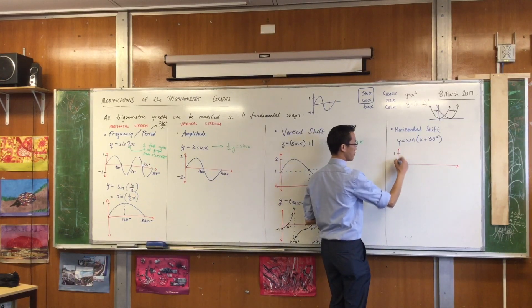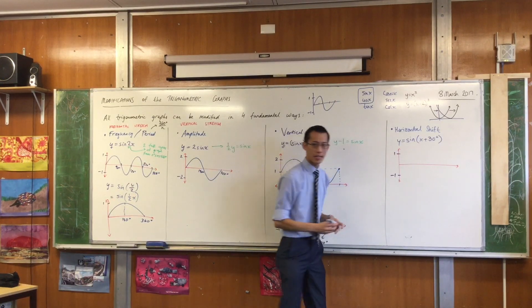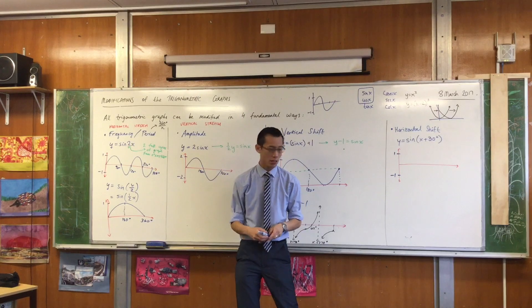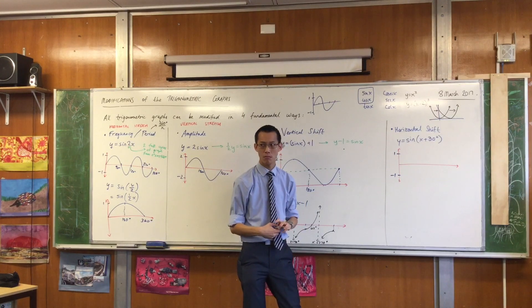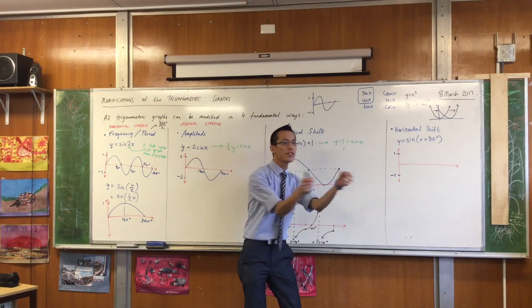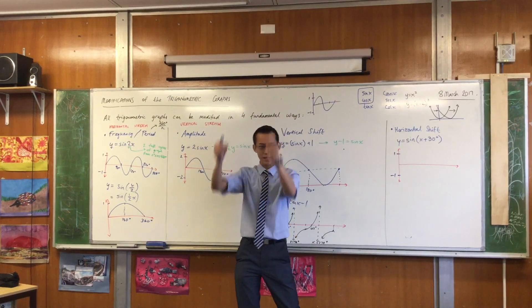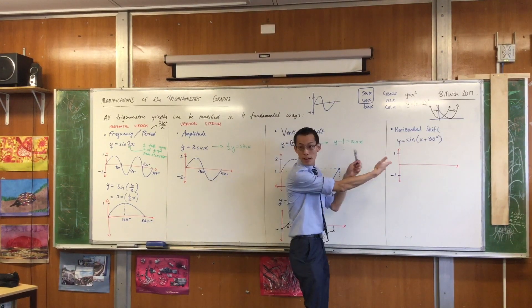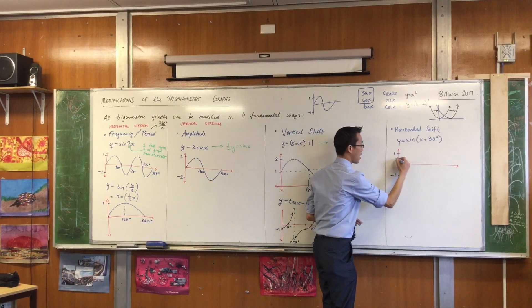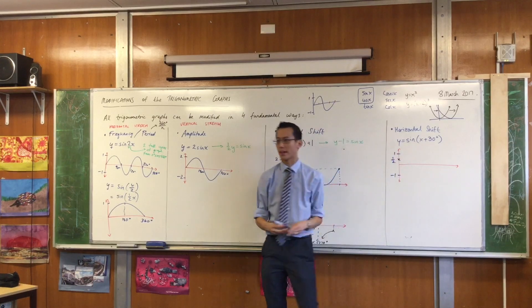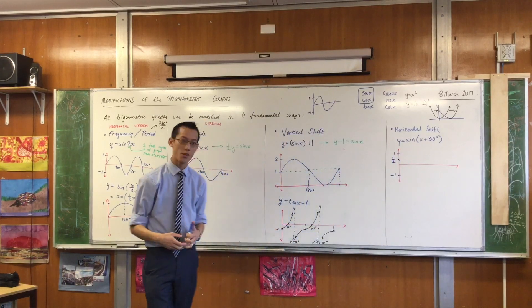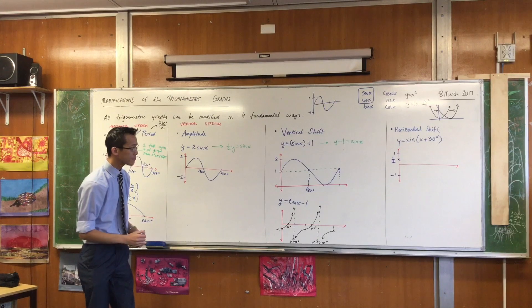So therefore, you can see my range hasn't changed. Why hasn't my range changed, by the way? Because I'm just moving side to side. It's not going up and down at all. So I'm still from a negative 1 to 1. That makes a half right there. So my sine curve is going to start over this way. That's a bit funny.